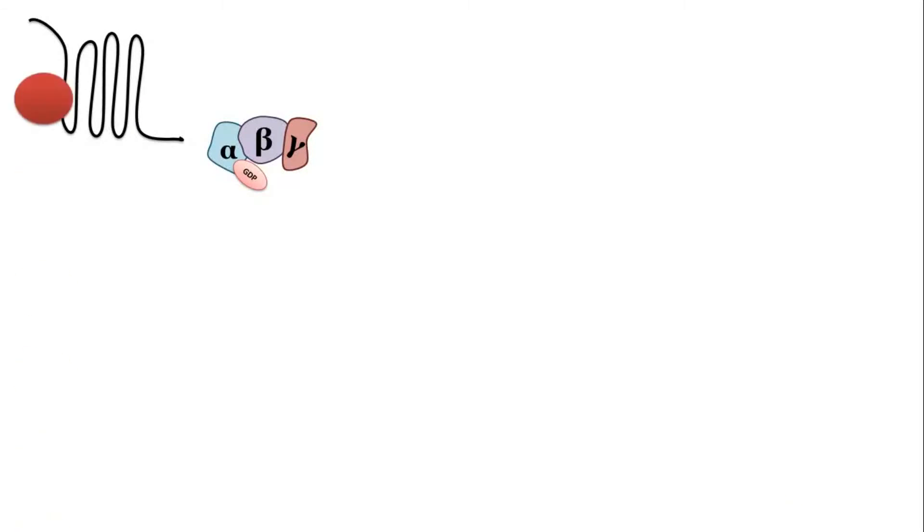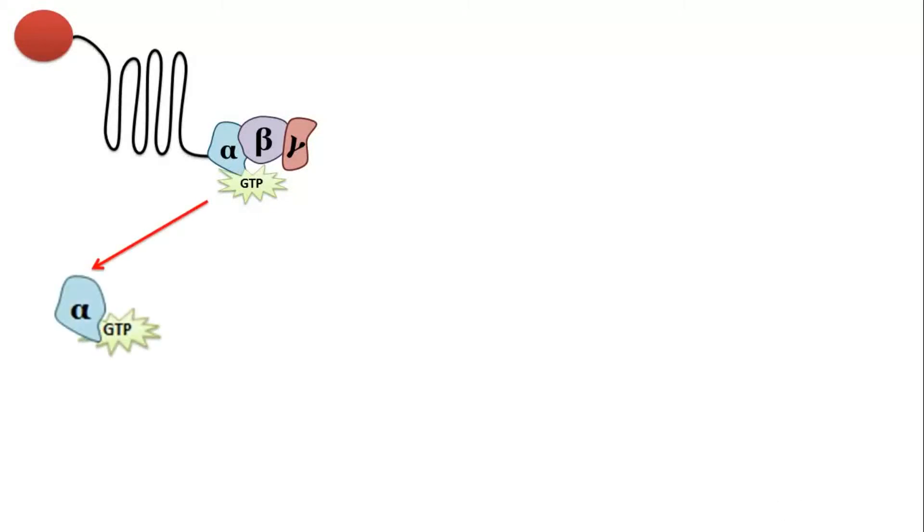When an agonist molecule binds with the receptor, a conformational change occurs. This causes interaction of the receptor with the G-protein. This reaction occurs within around 50 milliseconds. GDP dissociates from the alpha subunit and GTP binds. This causes the activation of G-protein and release of the alpha-GTP fragment and beta-gamma dimer from each other.